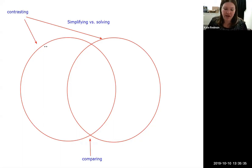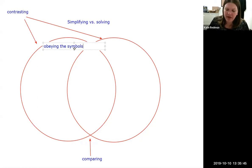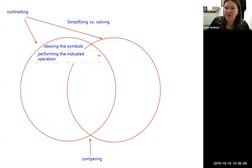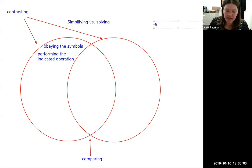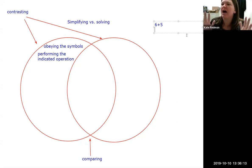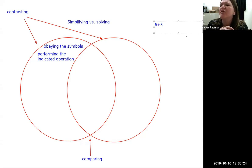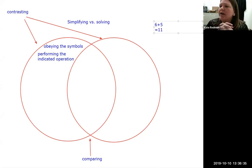Simplifying means obeying the symbols — doing what the operations tell you to do. In math words, I often call this performing the indicated operation. So if I ask Nicole what is six plus five, her head would automatically go towards simplifying — adding those two numbers, obeying the operation symbol. That's simplifying.